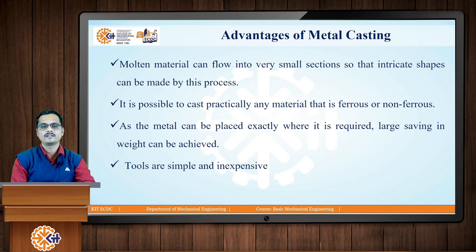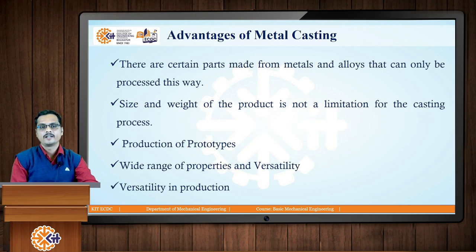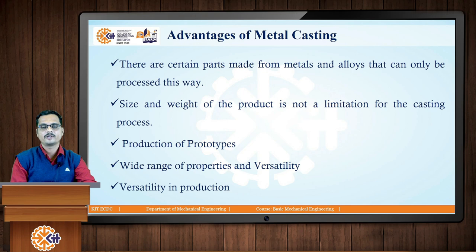The tools required for producing castings are very simple and inexpensive, especially for batch or mass production. Additionally, there are certain parts made from metals and alloys that can only be processed this way — super alloys such as titanium, nickel, and cobalt alloys have very high melting temperatures. Components manufactured from super alloys are used in defense and aerospace applications, and the only method by which we can produce such components is casting.